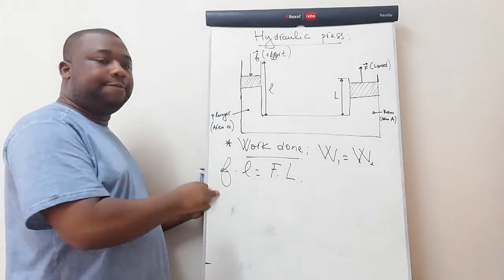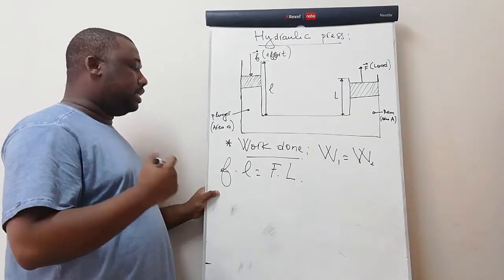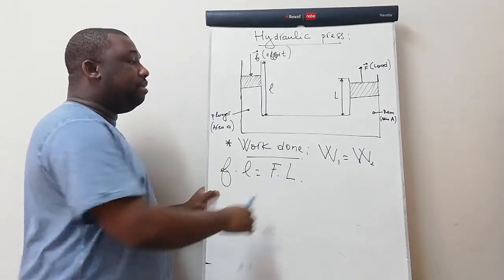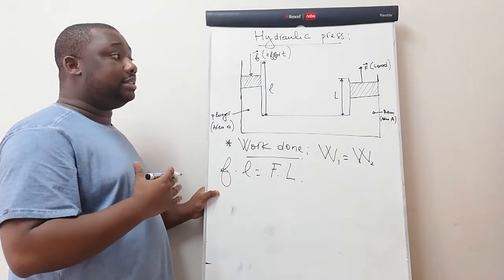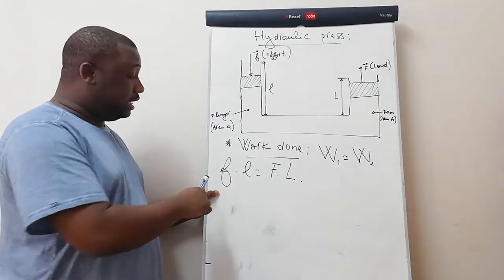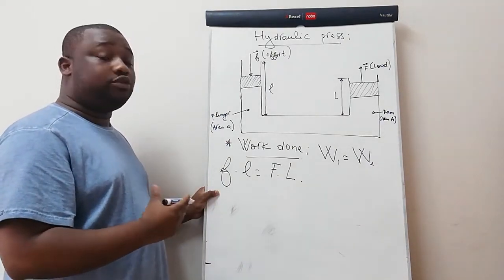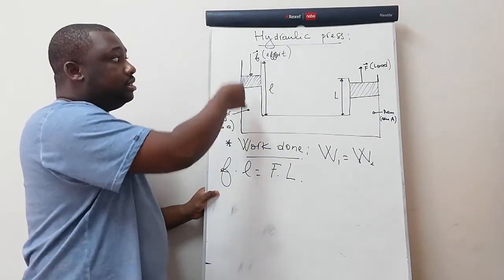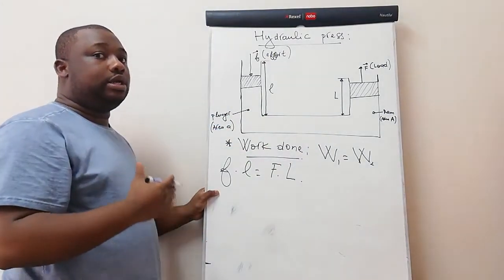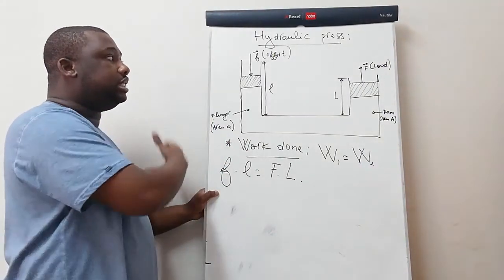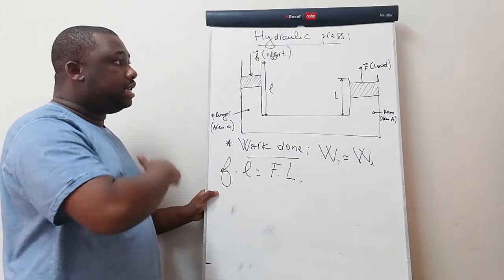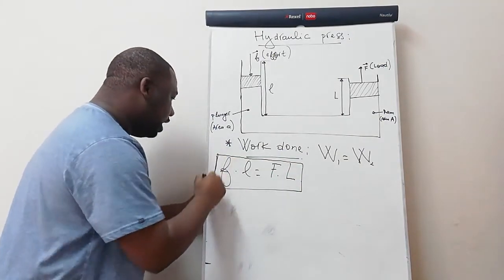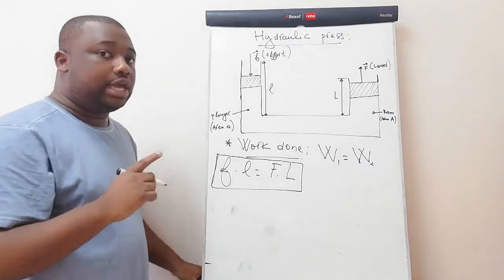Note that all variables on the small cylinder (the plunger) use small letters, while all variables on the bigger cylinder (the ram) use big letters. Also, the stroke length of the plunger is visibly larger than the stroke length of the ram.